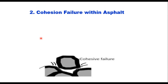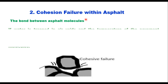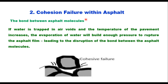The second mechanism is cohesion failure within asphalt. The bond between asphalt molecules is described as cohesion, and it is possible that this bond can be broken. If water is trapped in air voids and the temperature of the pavement increases, the evaporation of water will build enough pressure to rupture the asphalt film, leading to the destruction of the bond between the asphalt molecules.